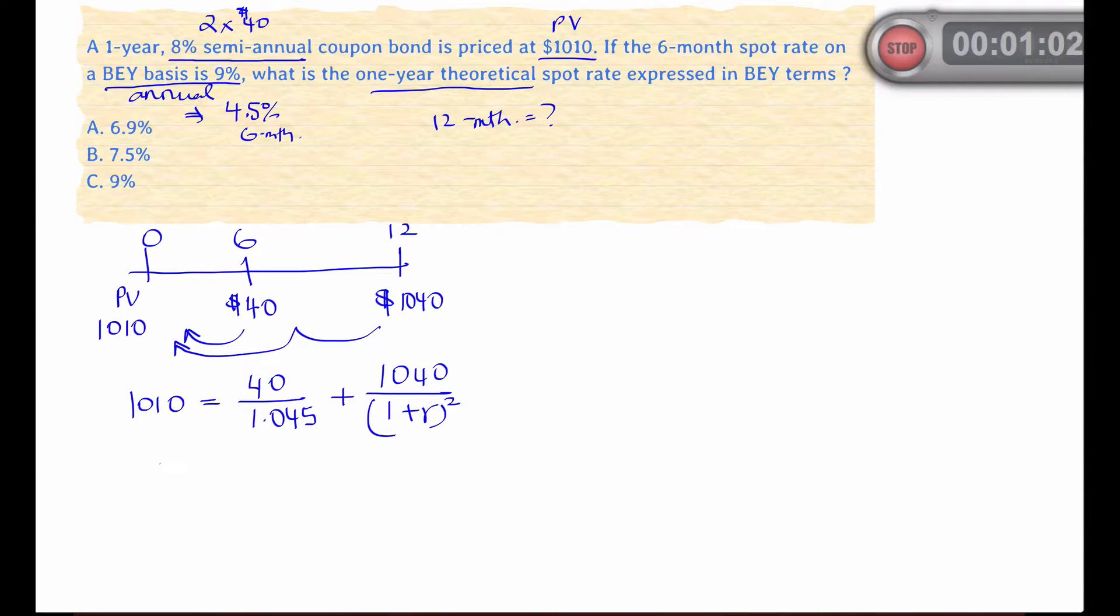Now what remains is to solve this equation. The first term works out to 38.28, and essentially now we're solving for the value r. We rearrange the terms and we end up with (1 + r)² equals 1040 over 971.72, and this term works out to 1.0703. We take the square root of this term and subtract one from that result.